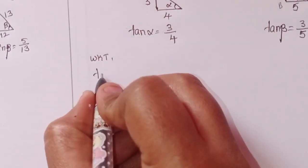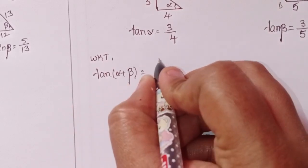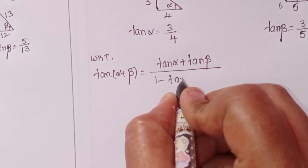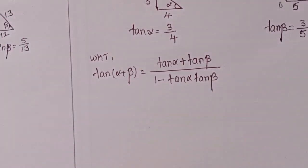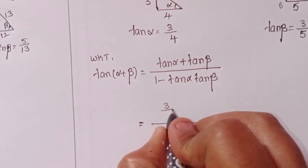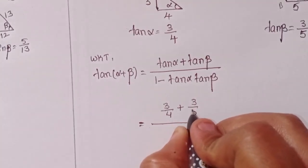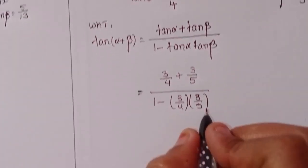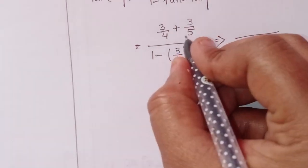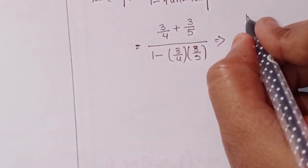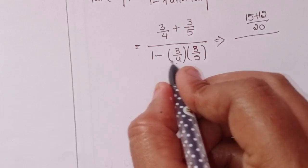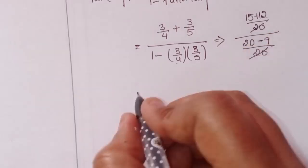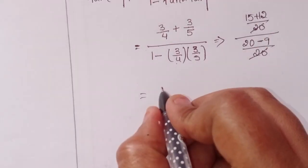We know that tan of alpha plus beta equals tan alpha plus tan beta, divided by 1 minus tan alpha into tan beta. That gives: 3 by 4 plus 3 by 5, divided by 1 minus 3 by 4 into 3 by 5. The LCM is 20, giving numerator 15 plus 12 equals 27, and denominator 20 minus 9 equals 11.